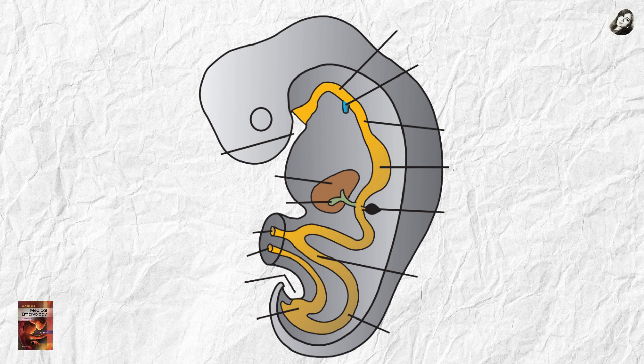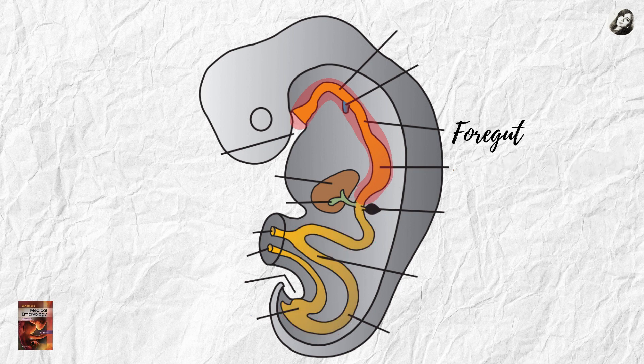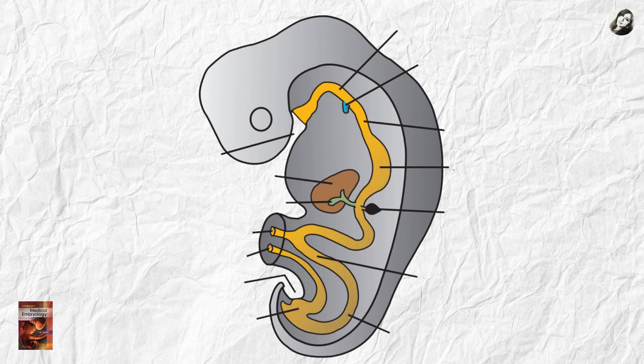We all have the idea about the primitive gut tube. This is an endodermal tube, which means this tube is totally made up of the endoderm. This primitive gut tube has three parts: the foregut, the midgut, and the hindgut. The foregut extends from the oropharyngeal membrane to the liver outgrowth.